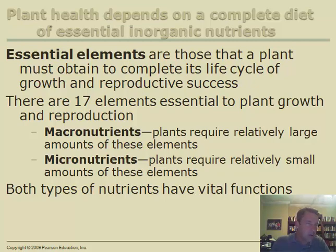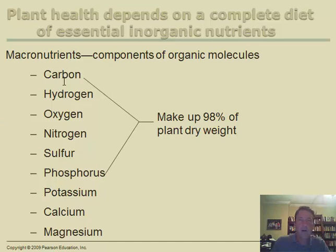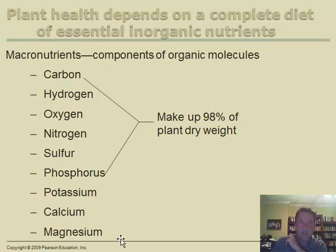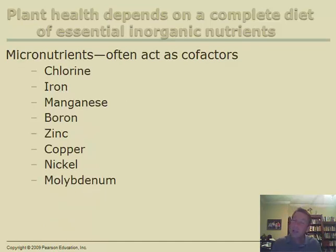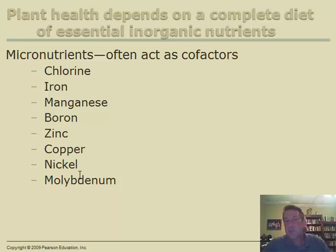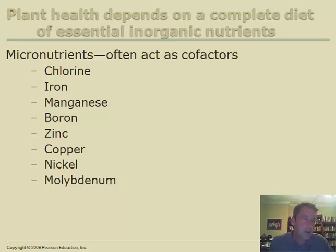The nine macronutrients are carbon, hydrogen, oxygen, nitrogen, sulfur, phosphorus, potassium, calcium, and manganese — those make up most of the plant's weight. The seven micronutrients (or eight if you include nickel) are chlorine, iron, manganese, boron, zinc, copper, molybdenum, and nickel. Nickel is the one sometimes excluded — some plants need it and some don't, but it is only needed in very small quantities.